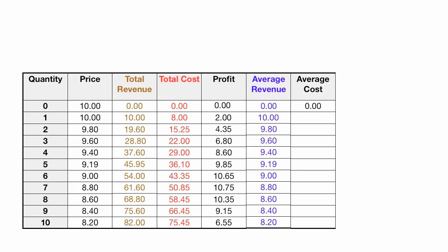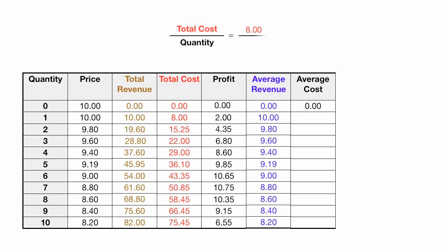Now I'm going to calculate average cost. Total cost divided by quantity equals average cost. So I take 8 divided by 1, which gives me an average cost of 8. Then I have a total cost of 15.25 divided by 2, which equals 7.63. I'll just fill in the rest of the values now.